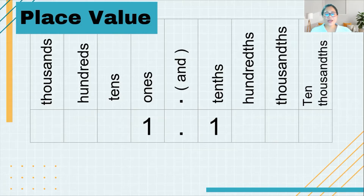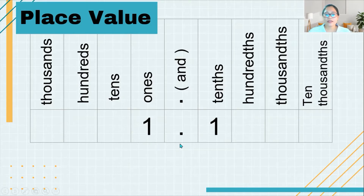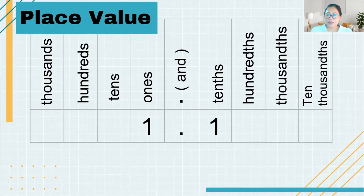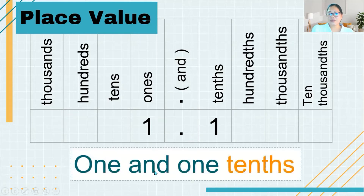Now let's start with our first example. We have the number 1, which is in the ones place, so we say 'one.' The dot is called the decimal point and it is read as 'and.' So we say 'one and.' The next number after the decimal point is in the tenths place, so we say 'one tenths.' This number is read as 'one and one tenths.'